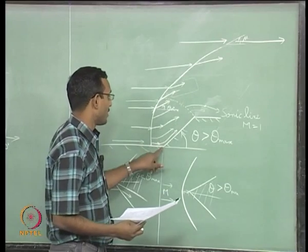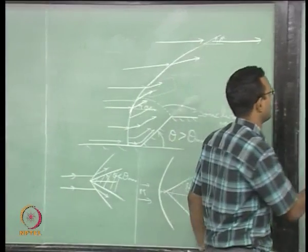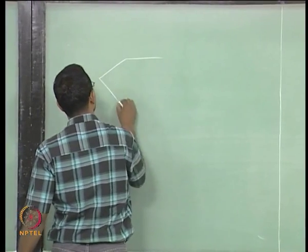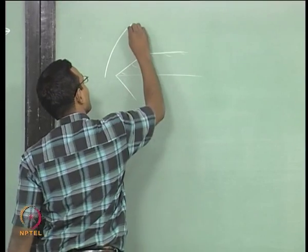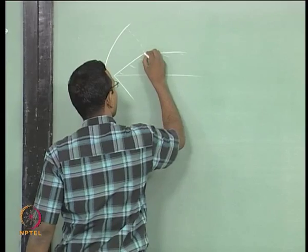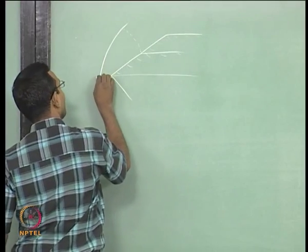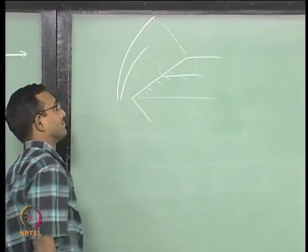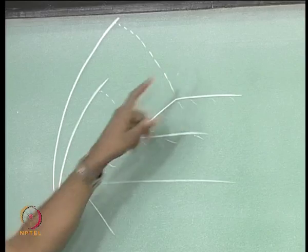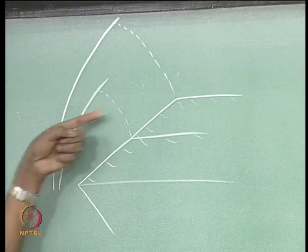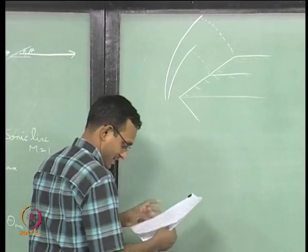Depending on how far the shoulder is from the starting point, the bow shock position shifts. If the body goes on indefinitely, it will give a particular standoff distance. If it turns and goes straight after some distance — like a missile — the standoff will be a little closer and is related to where the shoulder is. For the longer body, there will be a higher standoff distance and a larger subsonic region.